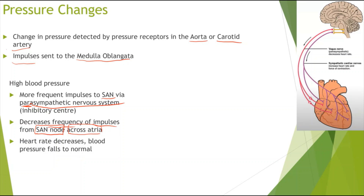Because the SAN sends impulses to the atria walls causing them to contract, when fewer impulses are being sent there will be fewer contractions, and in turn the blood pressure decreases because the heart rate decreases as well.